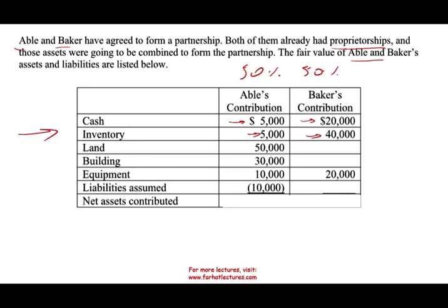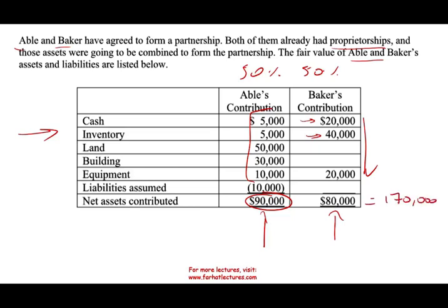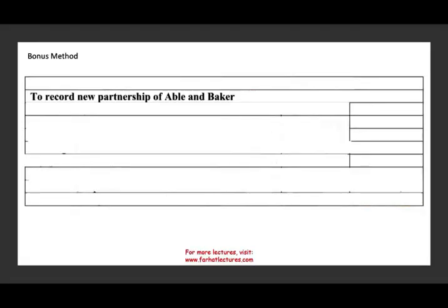Let's first compute the net contribution for each. For Abel, if we add all the assets minus the liabilities, we get a net contribution of 90,000. Baker contributed all assets with no liabilities, so the net contribution is 80,000. Their total contribution in total equals 170,000.